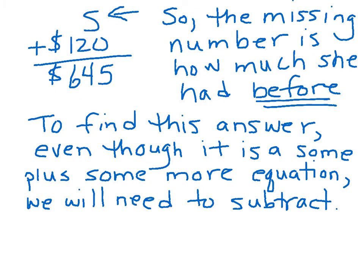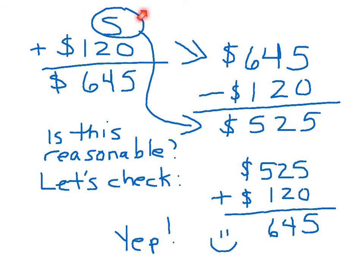What to do? Well, here's our formula. Sum plus more equals the total. The missing number is how much she had before. So to find the answer, even though it's a sum plus some more equation, we need to subtract. Sum plus 120 is $645. Let's subtract. Let's take our $645 and take away the $120. We get $525. Is this reasonable? Let's check. Let's add the $525 plus the $120. Do we get $645? We do. We are correct.